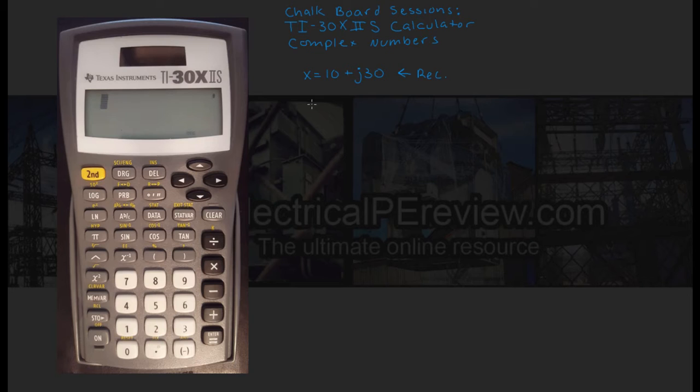The next button to locate is the Comma key, also being drawn now in blue. This is what's going to let us separate our magnitude value from our theta value or our real component from our imaginary component, and also requires the second key to activate.